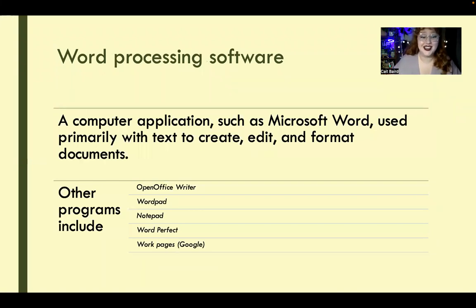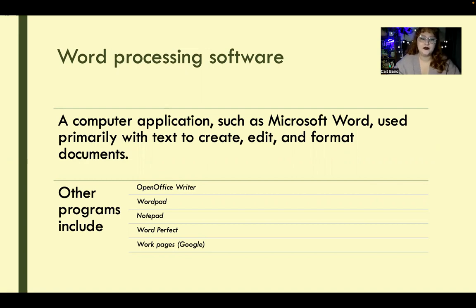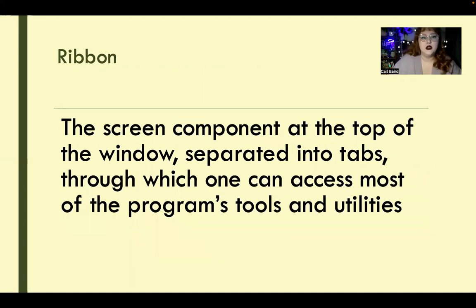So what is word processing and word processing software? Word processors are computer applications like Word, and they are used to create, edit, and format text. Text is the primary bulk of the content — it's writing. Other programs besides Microsoft Word include Open Office Writer, WordPad, Notepad, WordPerfect, and Pages.